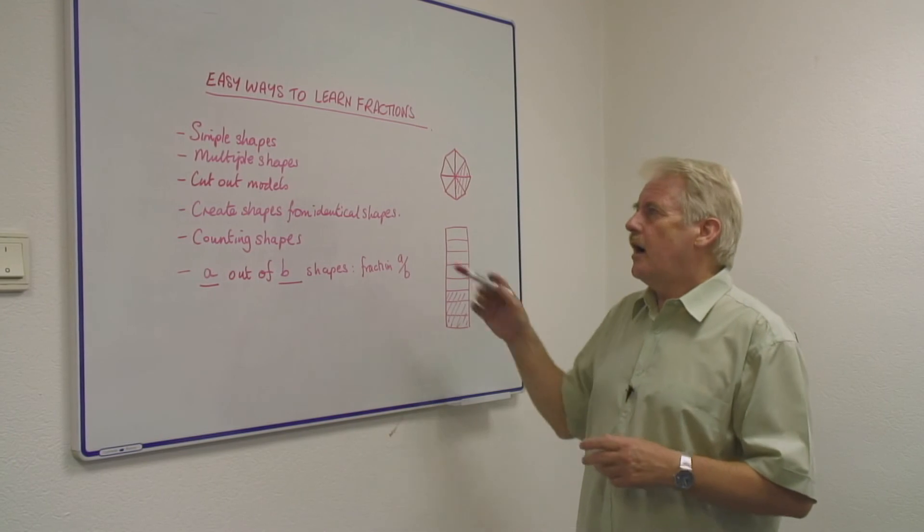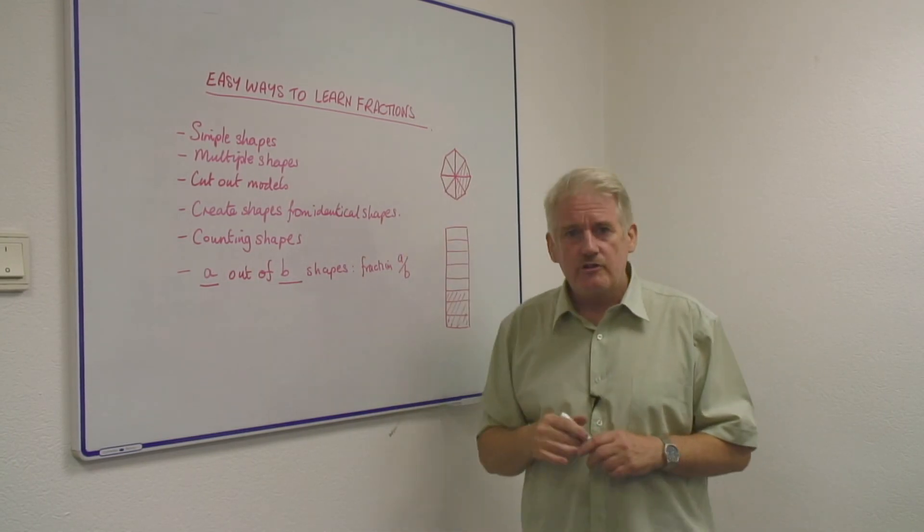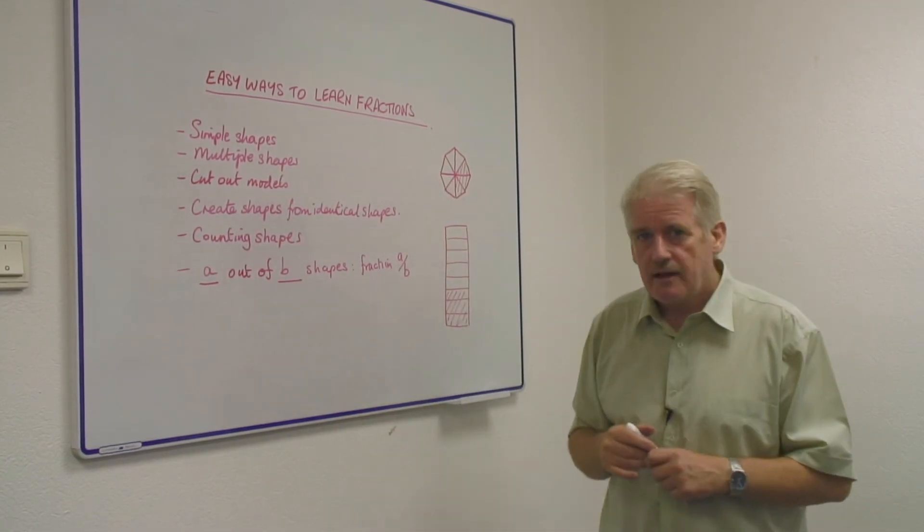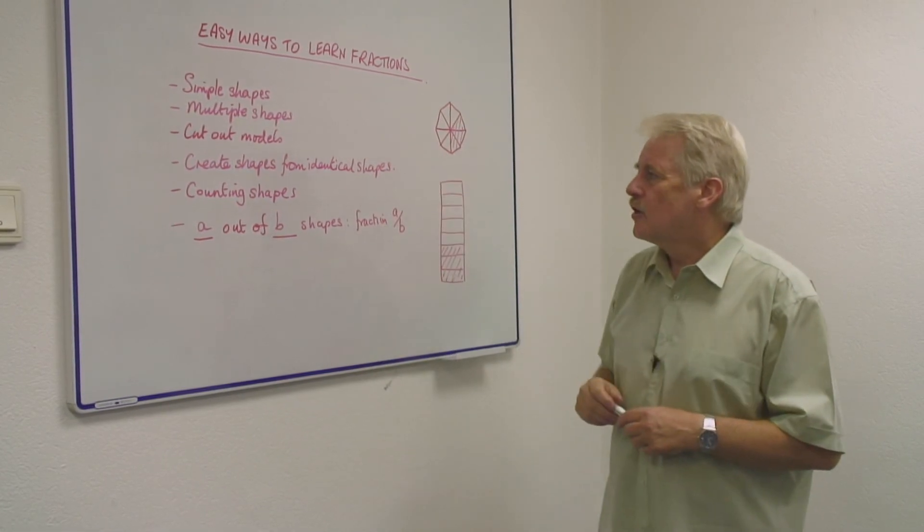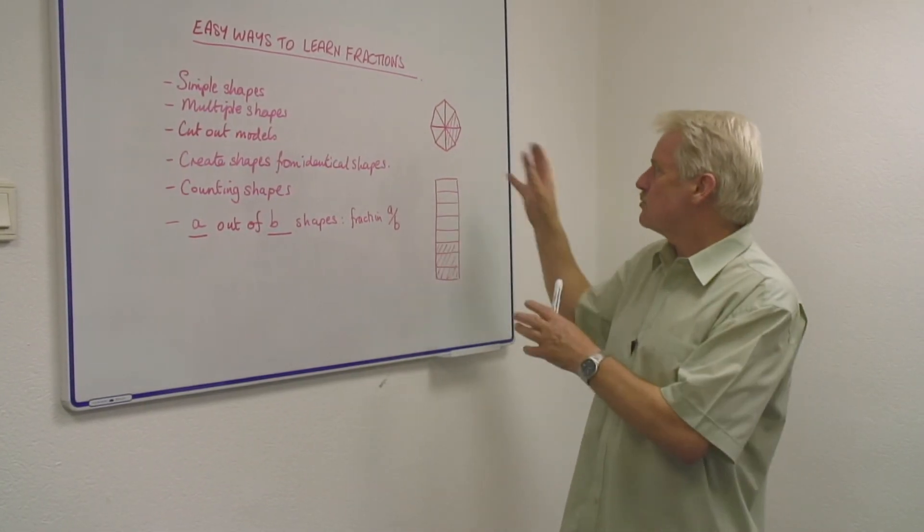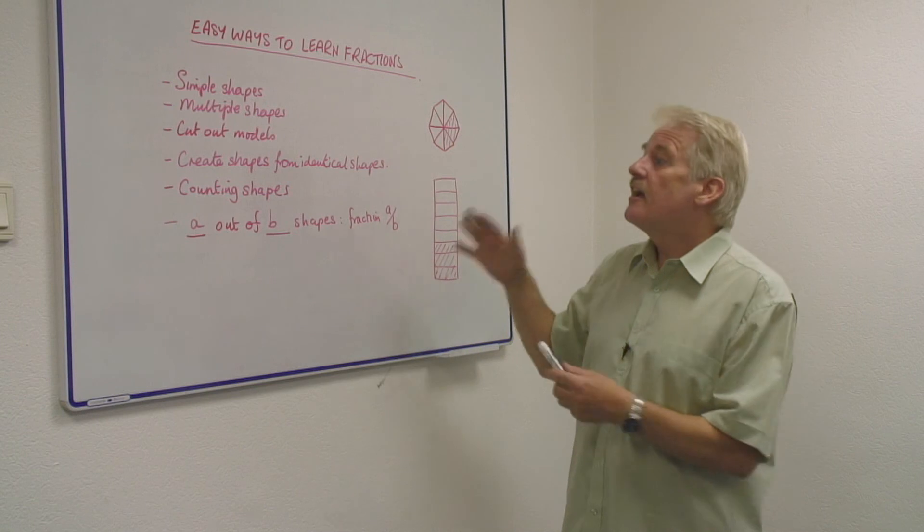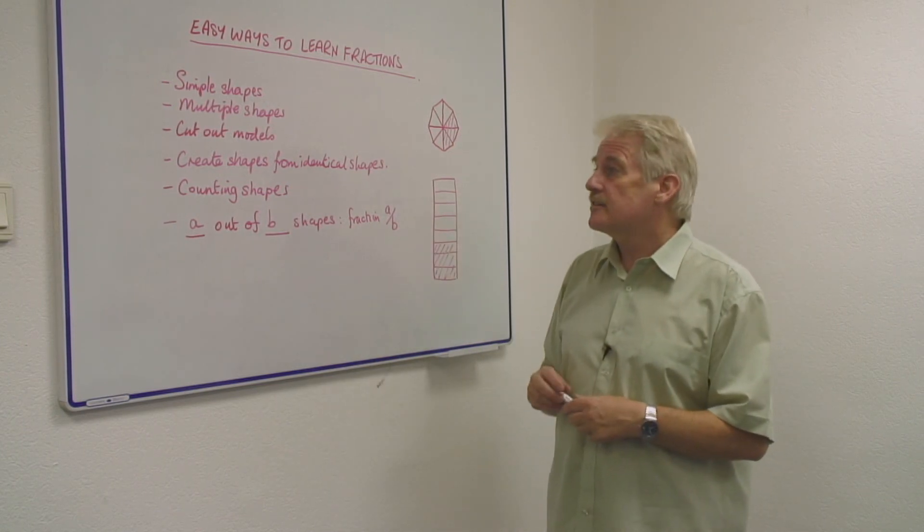But at this stage, I don't think we're interested in those more complex ideas. I think we just want to start with simple, very simple, cut-out model shapes, put them together into larger, more compact shapes, and then count the similar sectors.